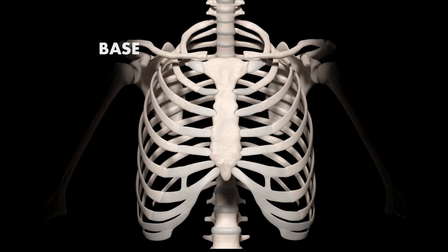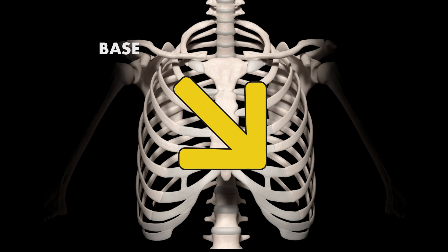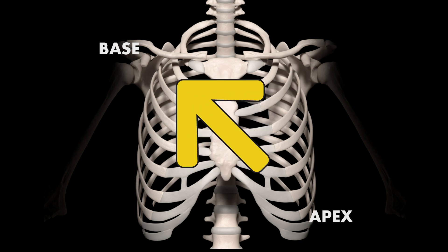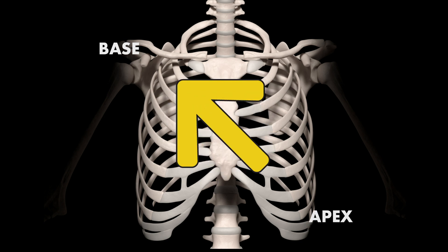You could start either at the base of the heart and work your way towards the apex, or you could start at the apex and work your way towards the base. Starting at the apex, you would move your stethoscope towards the left lower sternal border, then upwards towards the left second intercostal space, and then across to the right second intercostal space.